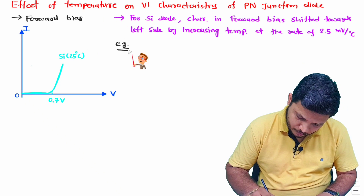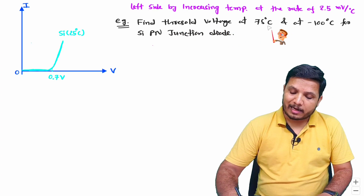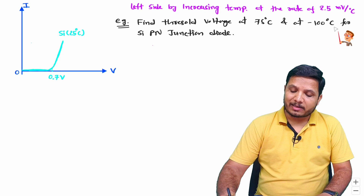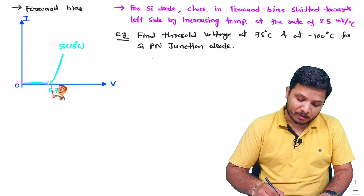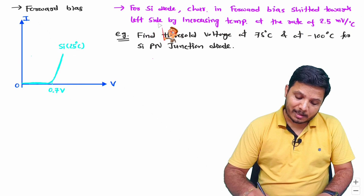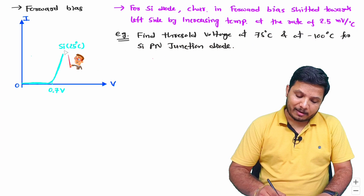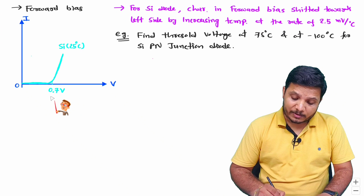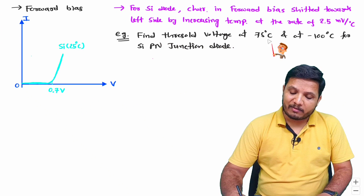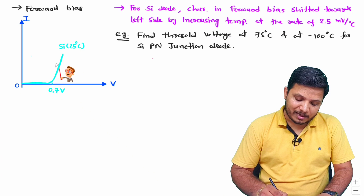The question is: find the threshold voltage at 75 degrees Celsius and at minus 100 degrees Celsius for a silicon PN junction diode. The characteristics of a silicon PN junction diode shift towards the left when temperature increases, at the rate of 2.5 millivolts per degree Celsius. Room temperature is 25 degrees Celsius, and at that temperature the threshold voltage is 0.7V. To reach 75 degrees Celsius, temperature must increase by 50 degrees Celsius, shifting the characteristics to the left.